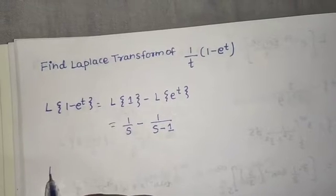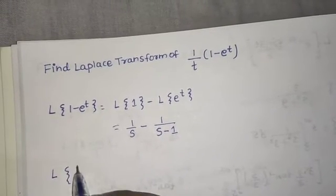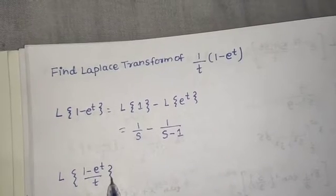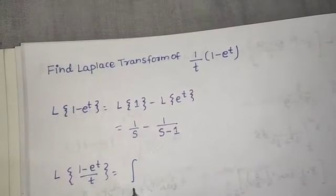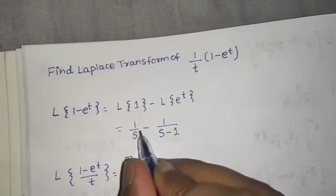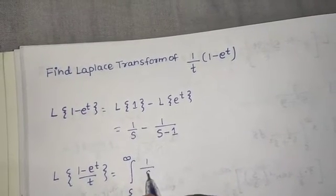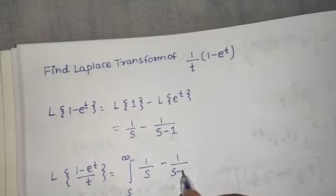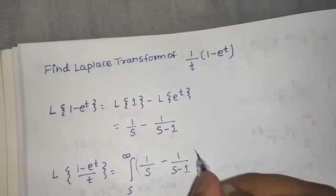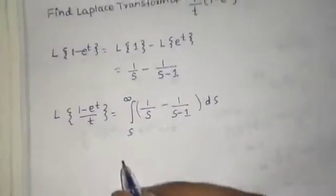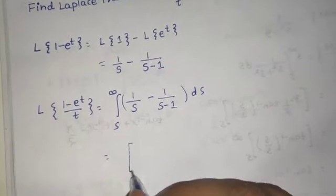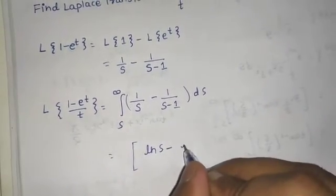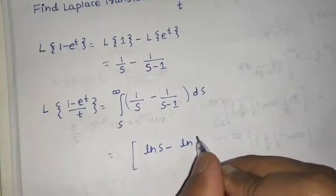Now we apply the division by t property, which says if we divide by t, we integrate from s to infinity whatever we got in the previous step. So we integrate 1 upon s minus 1 upon s minus 1, with respect to s.